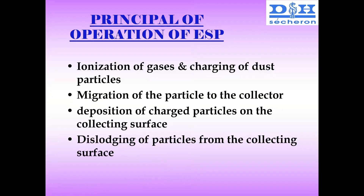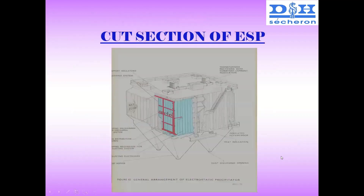To understand the principle of operation of ESP: ionization of gases and charging of dust particles, migration of the particle to the collector, deposition of charged particles on the collection surface, and dislodging of particles from the collecting surface. ESP stands for electrostatic precipitator — whatever ash in dust form is being taken by the ID fan towards the chimney passes through ESP filters, so that dust particles are held and as much clean air as possible passes through the ESP outlet to the chimney.